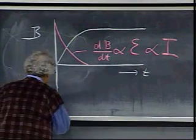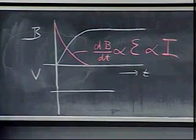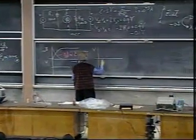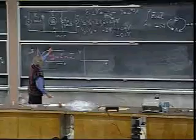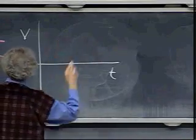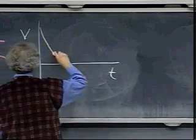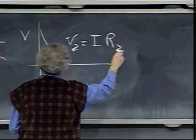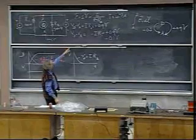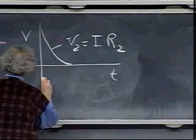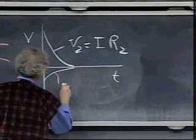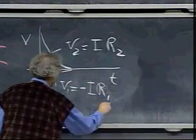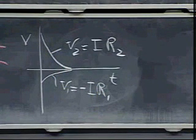So if we now plot the voltage as a function of time, the voltmeter on the right side — I call that V2 — will do this. V2 equals I times R2; at the maximum value, if those values were correct, it would be 0.9 volts. And V1 will go like this: V1 equals minus I times R1, which gives minus 0.1 volts.